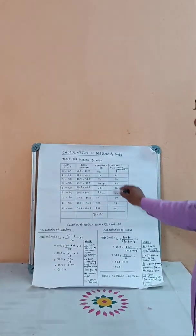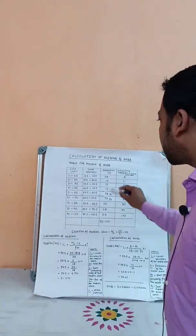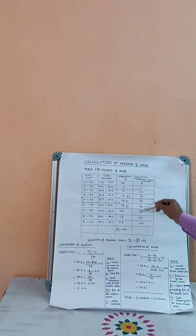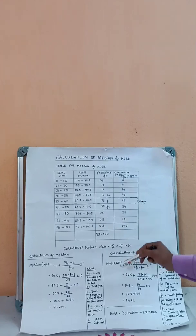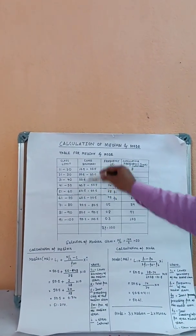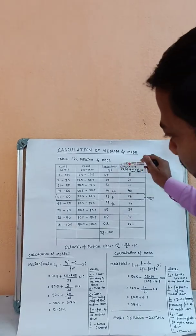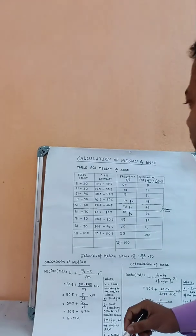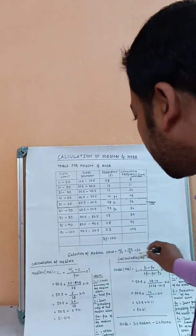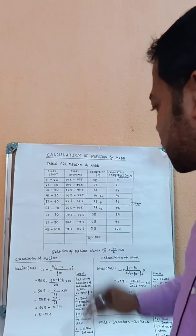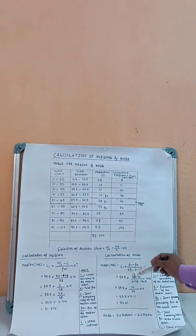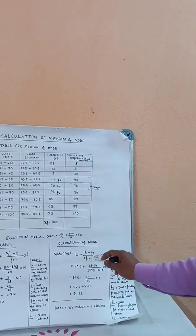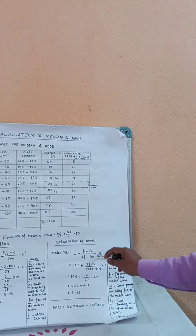From our table we calculate mode. The table has class limit, class boundary, and frequency columns. The mode formula is: L1 + (F1 − F0) / (2F1 − F0 − F2) × I.